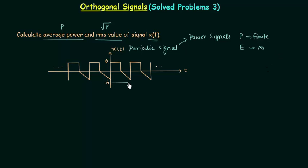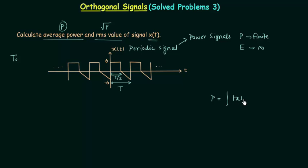Let's say the fundamental time period is capital T. Usually we represent the fundamental time period by T₀, but in this case I will represent it by capital T. If the full time period is T, then the half time period is T/2. We can easily obtain the average power by integrating |x(t)|² from 0 to T, then dividing the result of the integration by T.